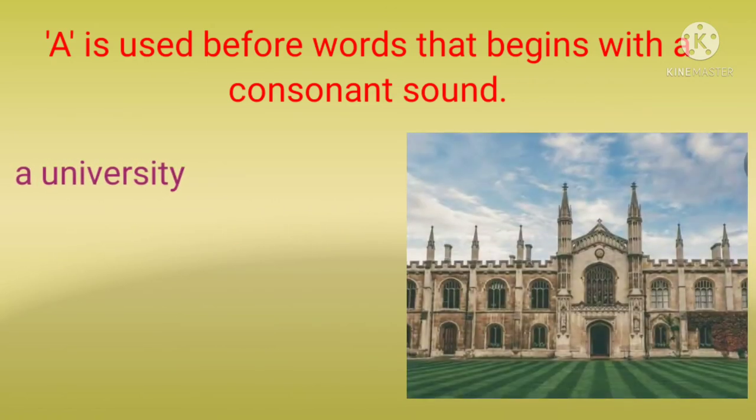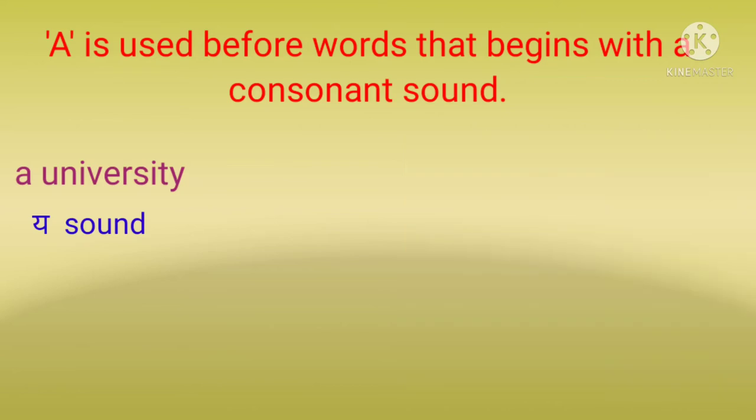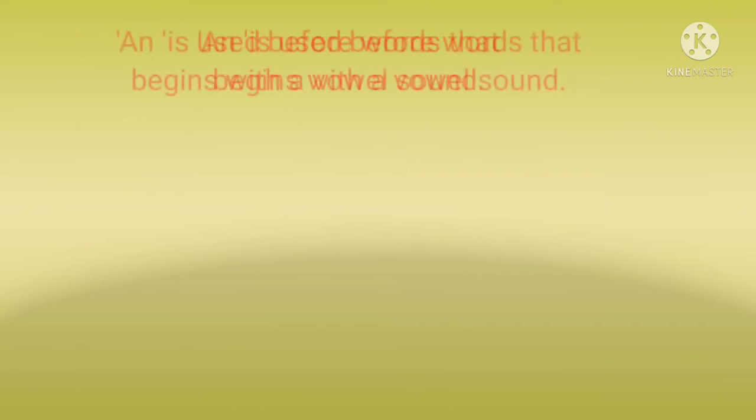Next is 'a university.' यह word 'u' से start होता है, जो एक vowel letter है, but इसकी sound vowel नहीं है — यह 'yu' sound देता है जो consonant sound है. तो हम यहाँ 'a' article use करेंगे.